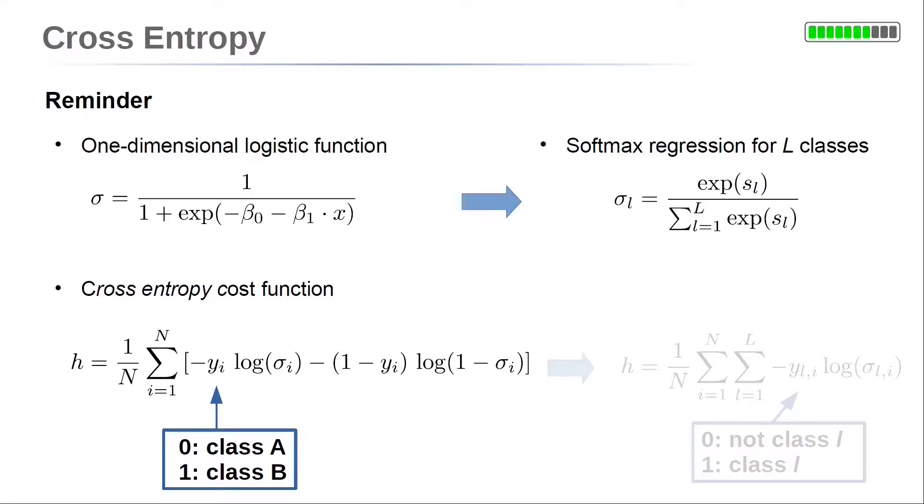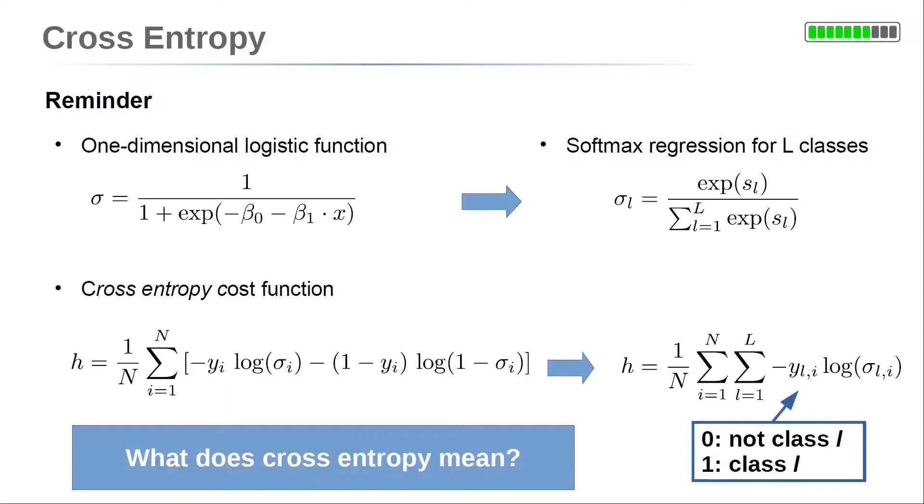Note that we have seen the generalization of logistic regression for multiple class classifications. This leads to the softmax regression. The cost function is generalized as well. It is 1 over capital M, the number of data points, times the sum over all data points by i and the sum over all classes by l, of minus yi, the true target value for the lth class, times the logarithm of the corresponding softmax function for the data point. In the following, we will look into the meaning of this cost function.